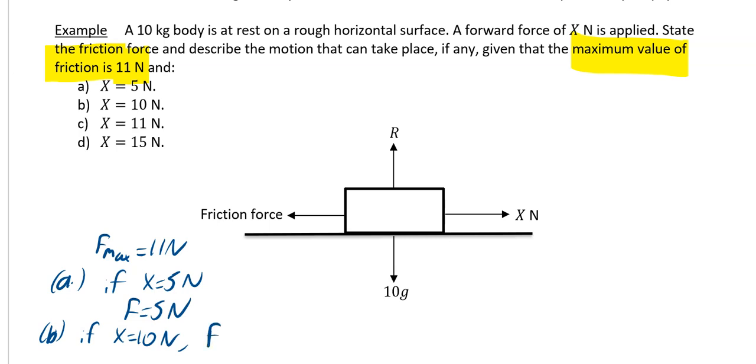So friction can keep going up, friction can still act at 10 and still prevent motion. So that is all that's going to happen. You've got the first one F is equal to 5, friction is equal to 5, second one friction is equal to 10.